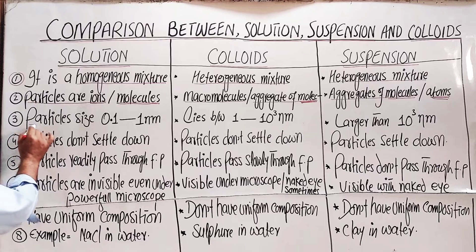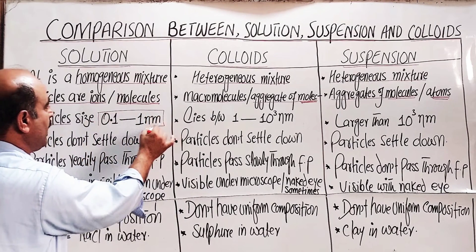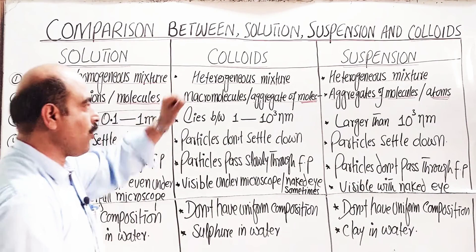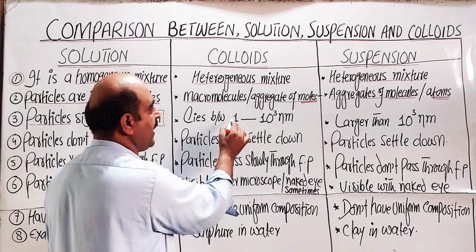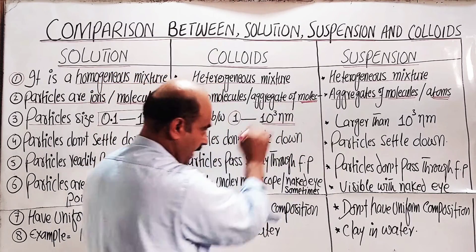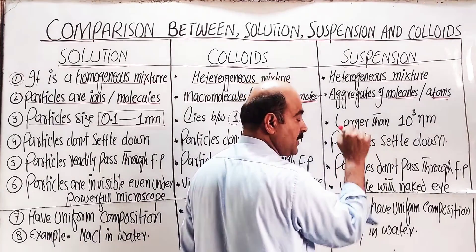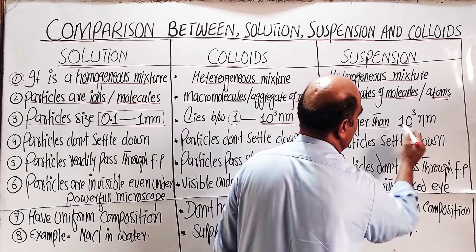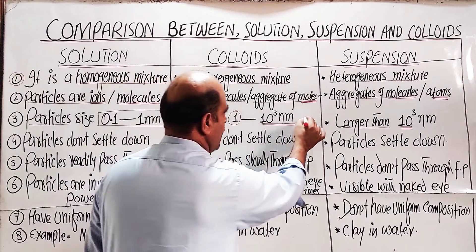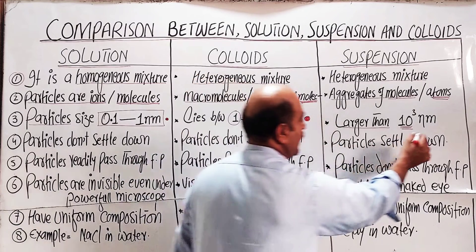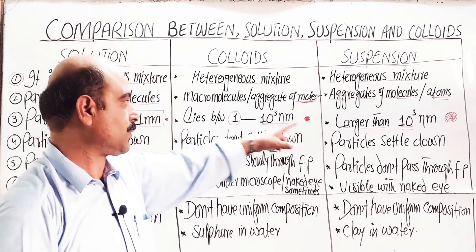Third difference — particle size: in solution, the solute particle size is in the range of 0.1 to 1 nanometer. In colloids, the dispersed particle size is in the range of 1 to 10³ nanometers. In suspension, the particle size is larger than 10³ nanometers. So the particle size of colloid is in between suspension and solution.